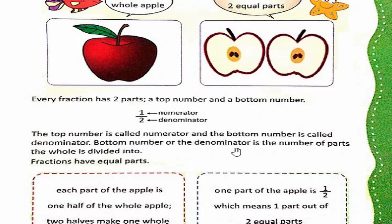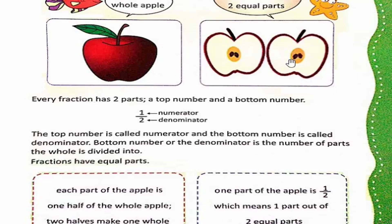The bottom number, or the denominator, is the number of parts the whole is divided into. Denominator kya hota hai? Is hole apple ko hum jitne hisson mein taqseem karenge, woh total hissay denominator hoga. Yaani idhar hum ne apple ko dho hisson mein taqseem kiya hai, toh denominator 2 hoga. Aur agar hum is apple ka ek hissah lenge, toh numerator 1 hoga.